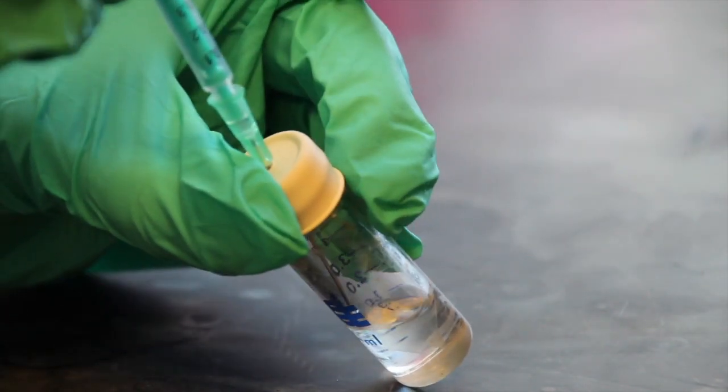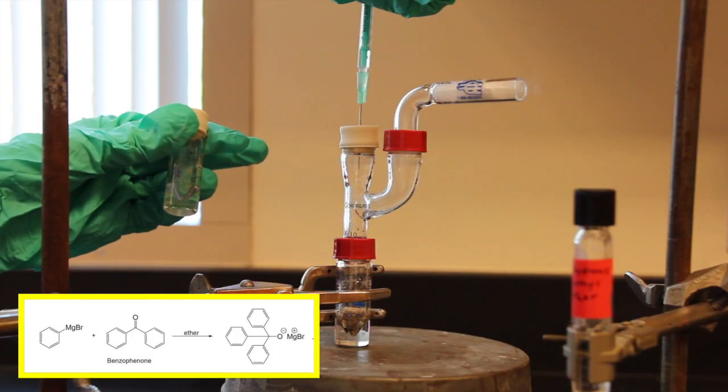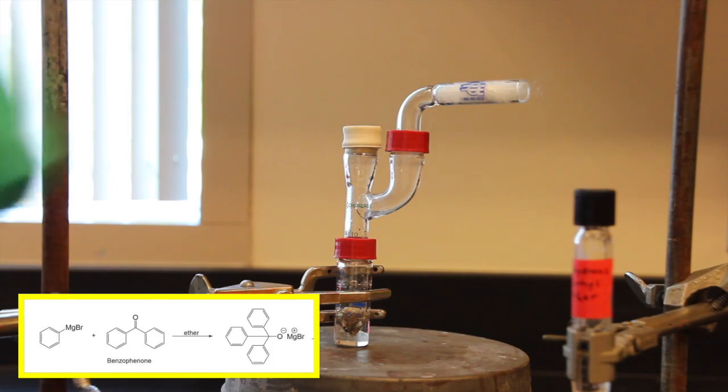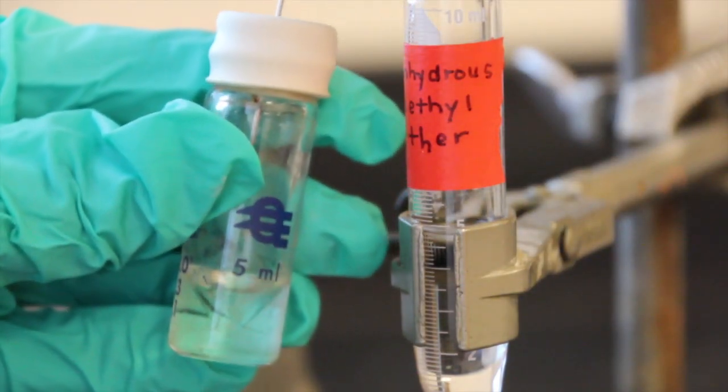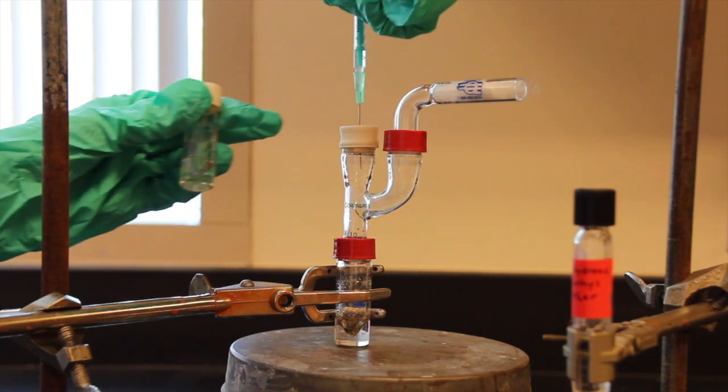Using the same syringe which has been used for the bromobenzene solution, draw the benzophenone solution into the syringe. Add the solution to the stirred Grignard reagent as rapidly as possible, but not so rapidly that the solution boils away. Rinse the vial that contains the benzophenone solution with about 0.2 milliliters of anhydrous ether and add it to the mixture.